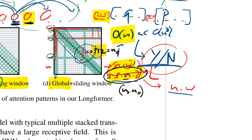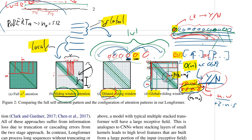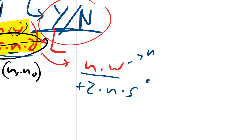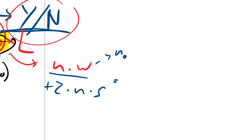Then you add the global attention. If you have, say, four locations of global attention, you have four times two — because you also have them in the other direction — times your full sequence length. So that's plus two times full sequence length times the number of global attention locations, which I call s. Since the window size in their experiments equals n₀, let's replace window size with n₀ and factor out n, giving us n times (n₀ + 2s).